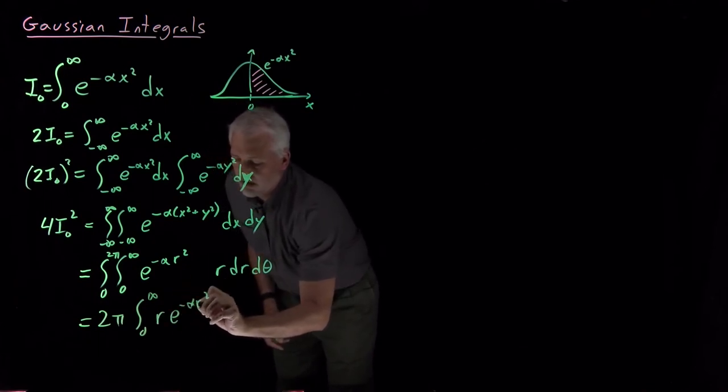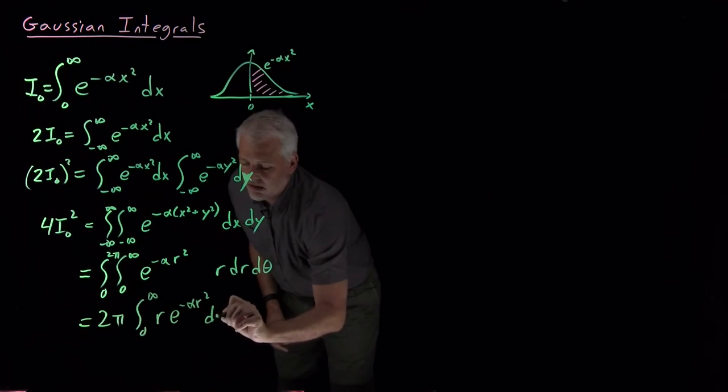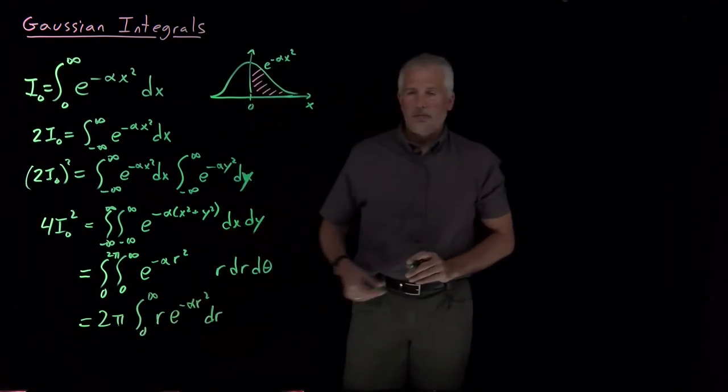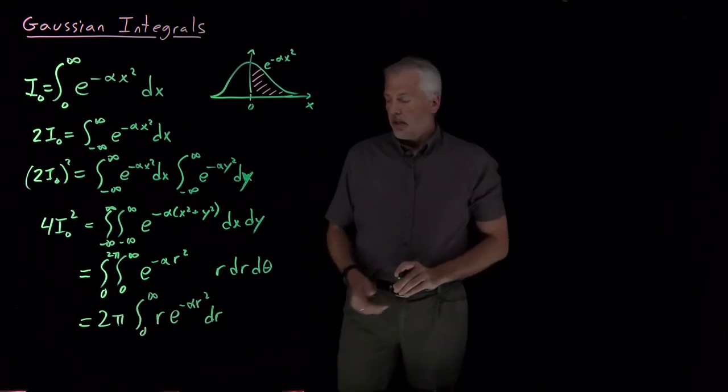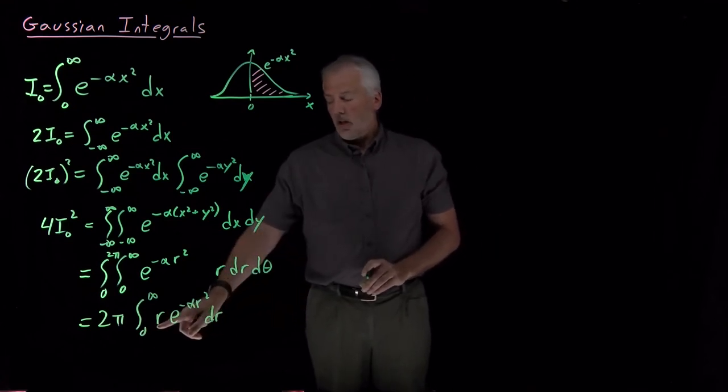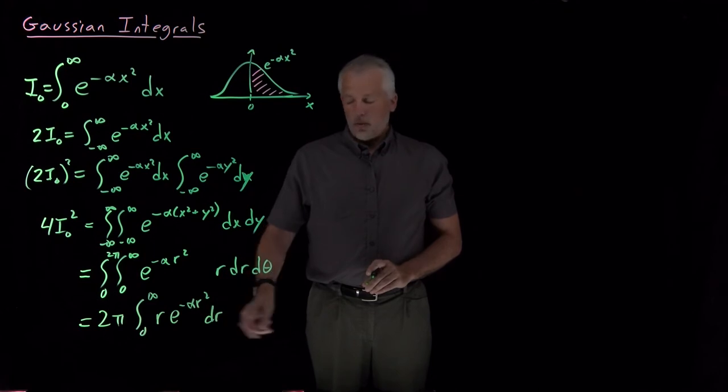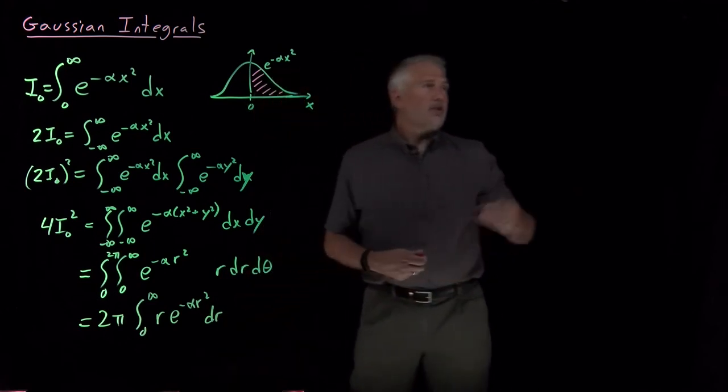So I've got r times e to the minus alpha r squared times dr integrated from 0 to infinity. That's actually a much easier integral to do, especially once we notice that r looks like the derivative of an r squared, so we can use u substitution.